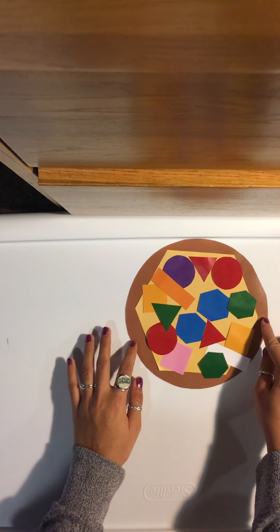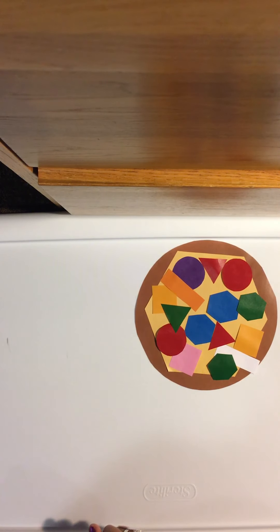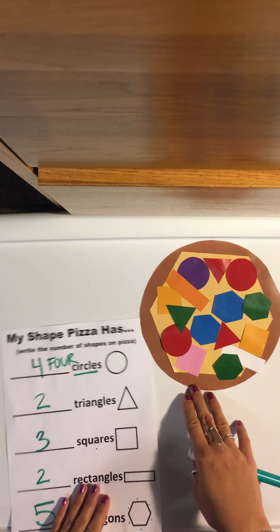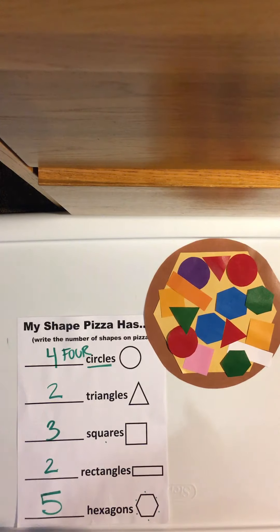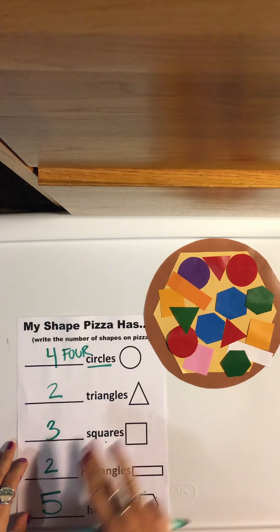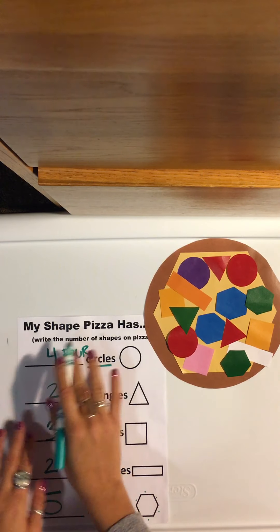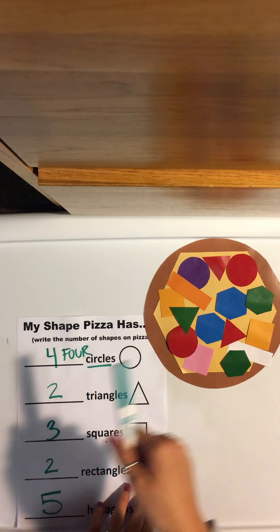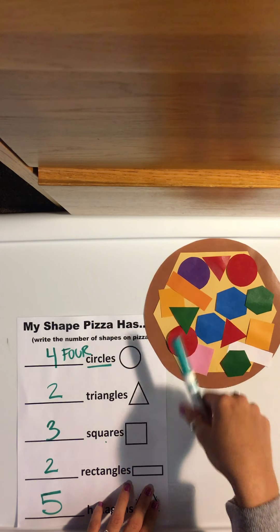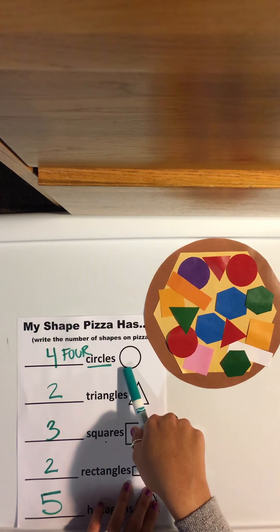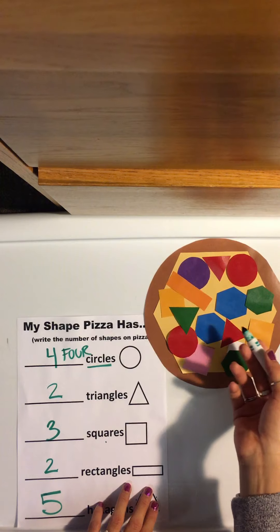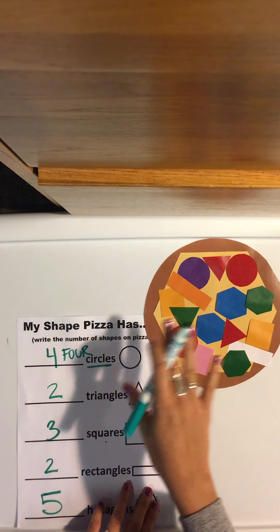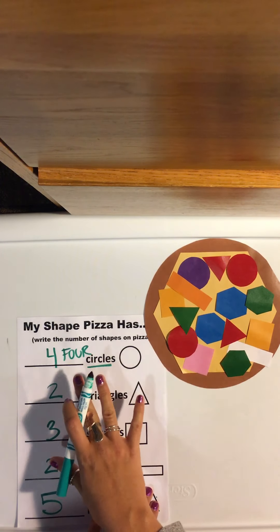I'm going to put my pizza on the side right now and grab the sheet you would have. Unfortunately, I did already write on it because my first video cut out, but we're going to just pretend, okay? So you're going to get this shape pizza paper, and it won't have any writing on it. It's going to be blank, and you're going to correspond from your shape pizza to your paper. So what I mean by that is you're going to write however many shapes are on your pizza, and then you're going to write it on your paper.